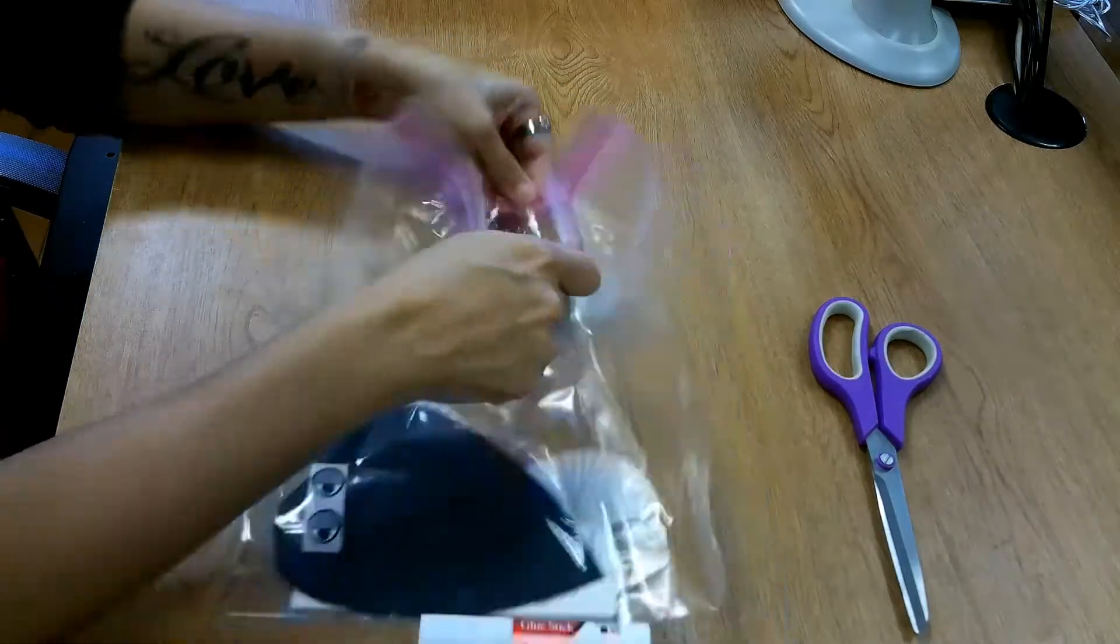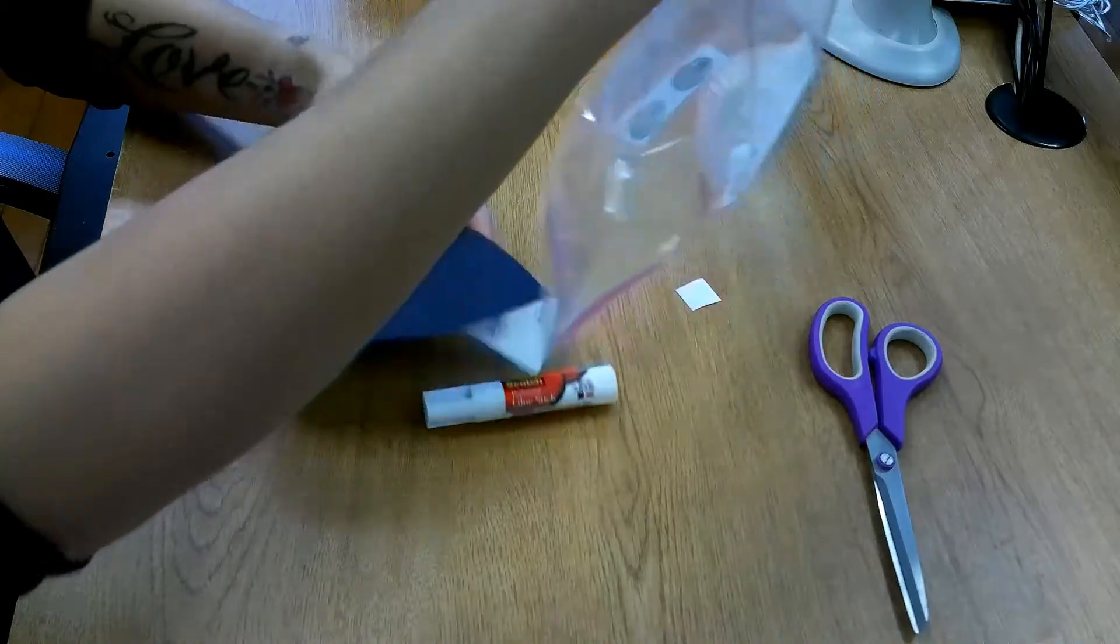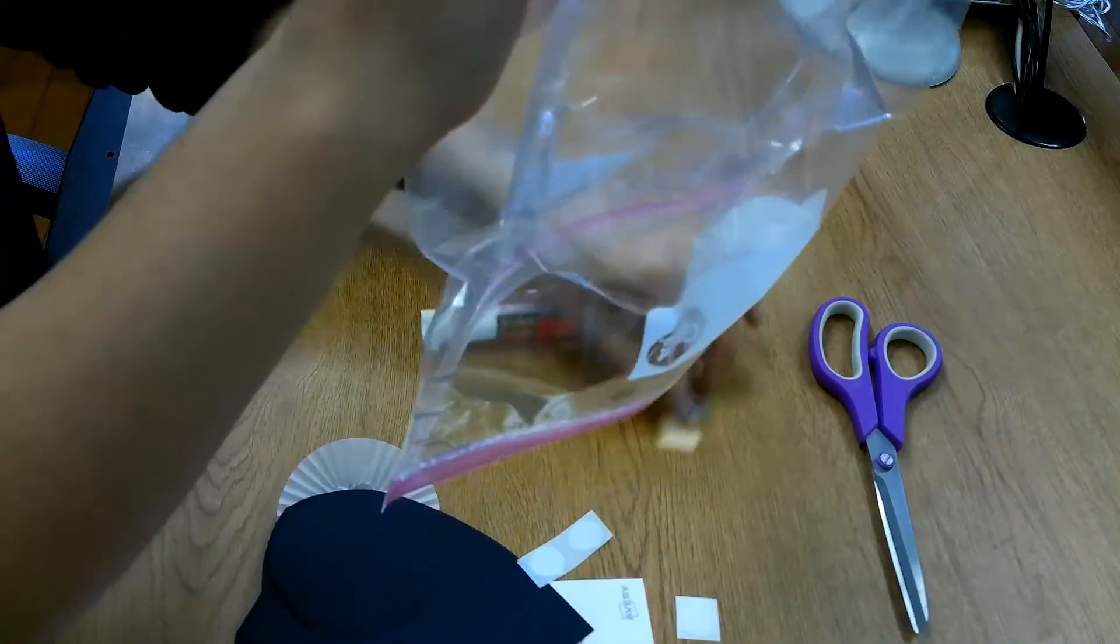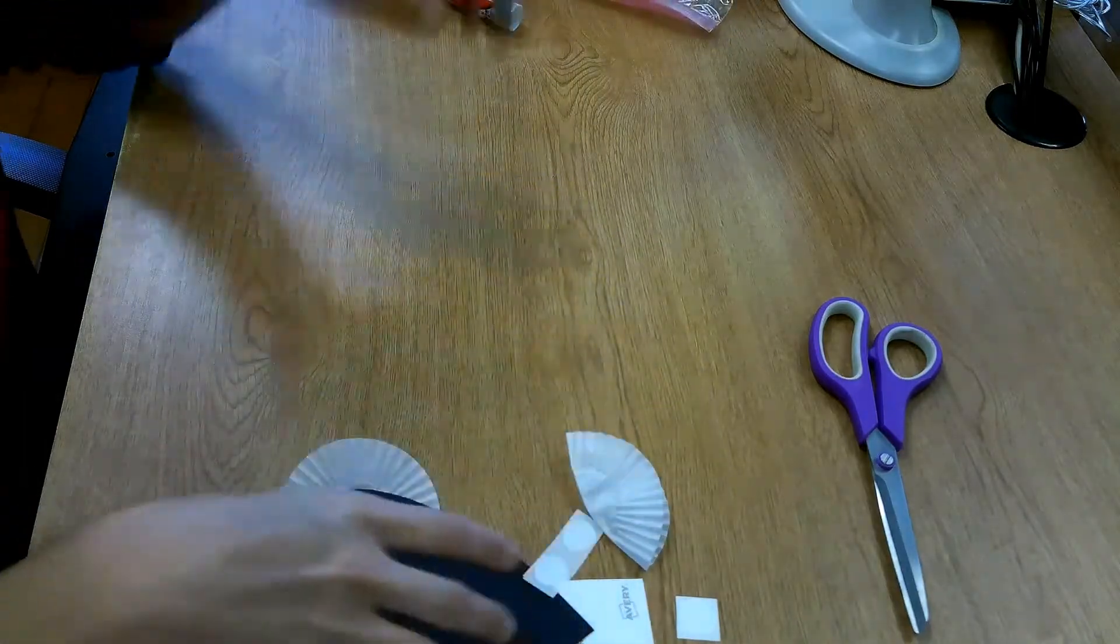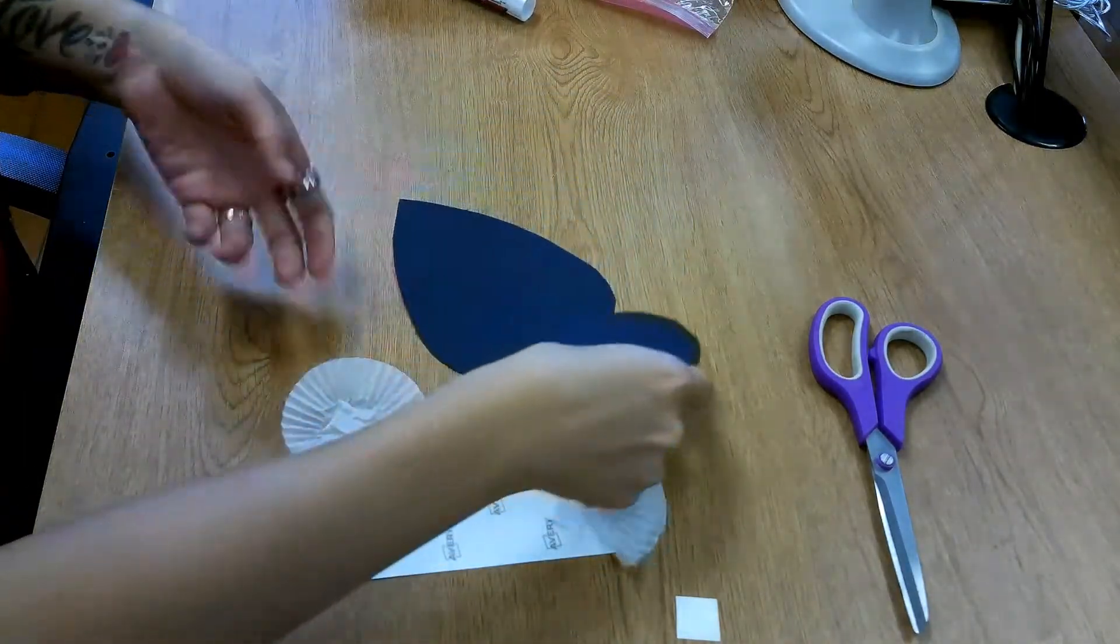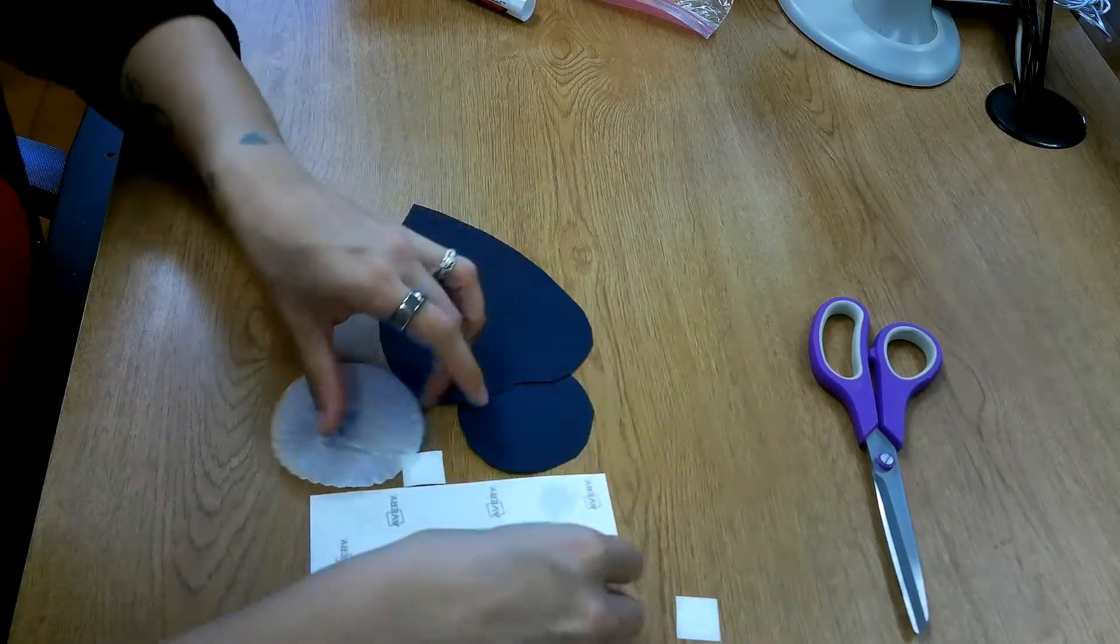So we're gonna go ahead and open up our craft kit and take out our black pieces of paper. We've got some cupcake liners. We're going to make a little bumblebee today. It's super cute.